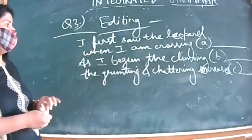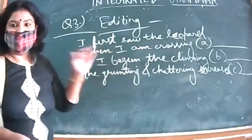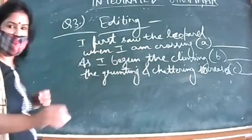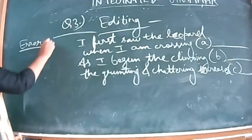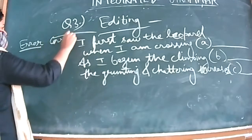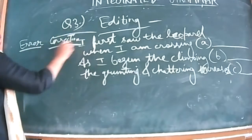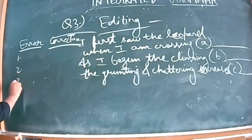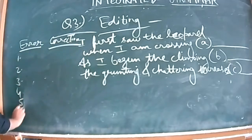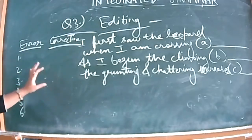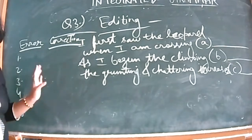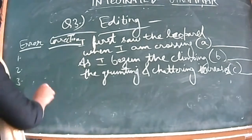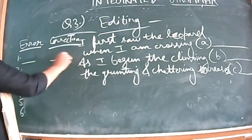You do not need to write the whole passage in the paper. You will give the heading 'error' and 'correction.' Basically 6 to 8 errors — if it is 6 marks, that is 3 marks at half mark each. If 8 in number, you can get 1 each also. The error column is here, and the correction is here.